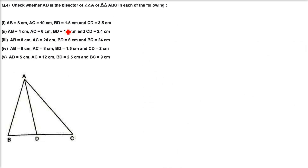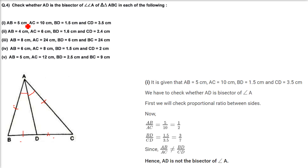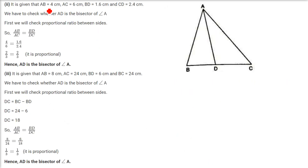Now this is the converse: given sides AB, AC, BD and DC, we check if AD is the angle bisector by comparing AB by AC with BD by DC. First case: 5 by 10 equals 1 by 2, but 1.5 by 3.5 equals 3 by 7 — they are not equal, so AD is not the angle bisector. Second case: 4 by 6 equals 2 by 3, and 1.6 by 2.4 equals 2 by 3 — they are proportional and equal, so AD is the angle bisector of angle A.